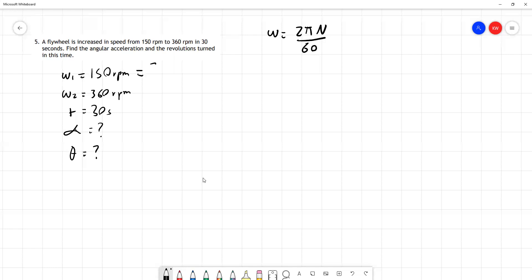We can convert each of these to 2 pi times 150 divided by 60 and 2 pi times 360 divided by 60. Here's one of these opportunities where we have the ability to keep working with pi in our number. If we don't multiply by the pi, we find that this is 5 pi radians per second and this is 12 pi radians per second. The reason for doing so is because this is an exact value.